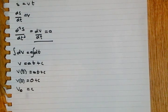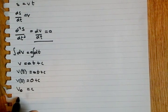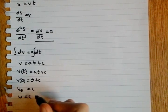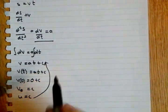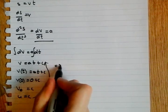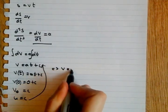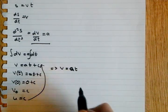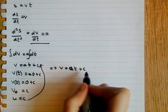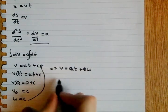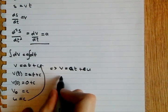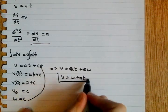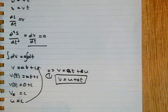V naught, the initial velocity, is then rewritten as U equals C. Putting this back in this equation up here, this will give us V equals AT plus U. And I rearrange that again, we get V equals U plus AT, the first equation of motion for constant acceleration.